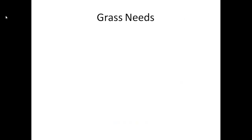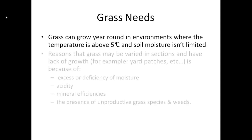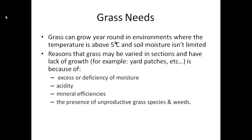So what does grass need in order to retain this coloration? Grass can grow in environments where the temperature is above 5 degrees Celsius and soil moisture isn't limited. The reasons grass varies — like yard patches and regions of yellow or dead grass — is due to excess or deficiency of moisture, acidity, mineral deficiencies, or the presence of unproductive grass species and weeds.